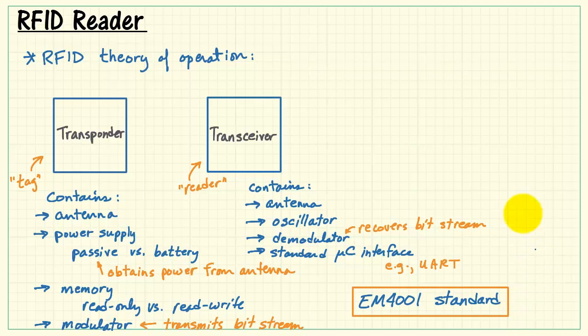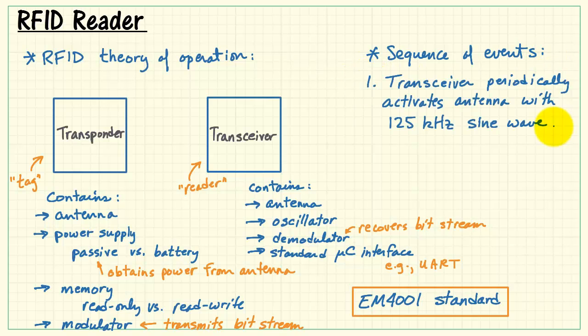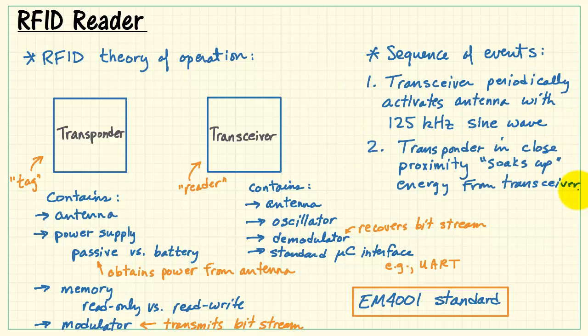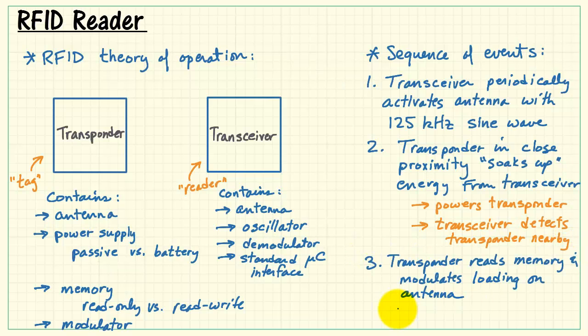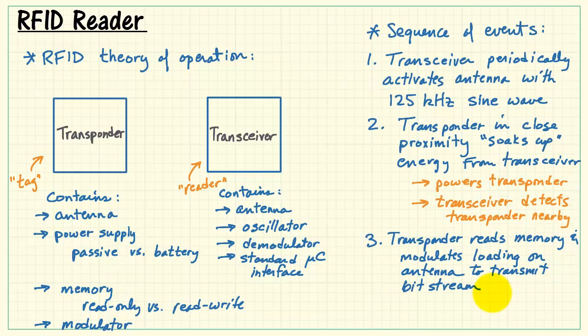Now, I'm still keeping the discussion fairly general, but some of the numerical values will be specific to the EM4001 standard. Here's the sequence of events. The transceiver periodically activates its antenna with a 125 kHz sine wave. When a transponder is close enough, it actually soaks up some energy from the transceiver. That powers the transponder, and the transceiver can actually detect that the transponder is nearby.